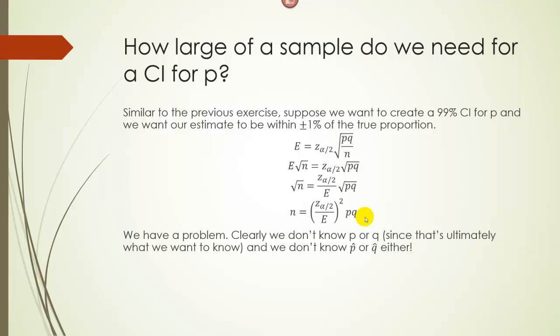So realistically, whatever number we get here, our actual number that we need is really going to be a little bit less than that. But just in case P and Q are both one-half, this will give us what our minimum sample size is.